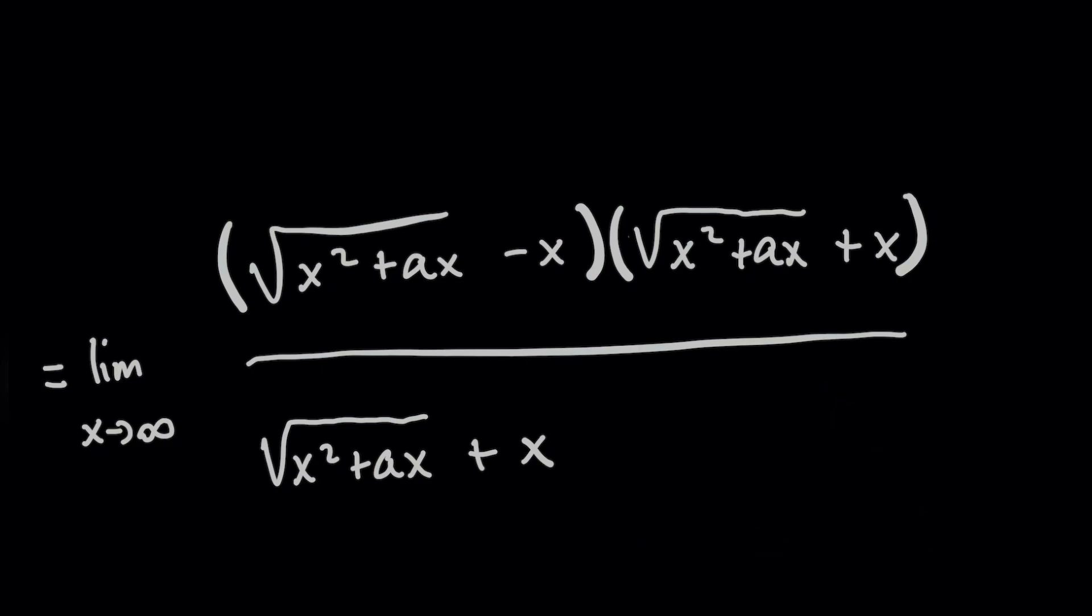And similarly, in the original expression, if we had a plus here instead, the conjugate would be a minus b divided by a minus b. Now, why are we doing this?